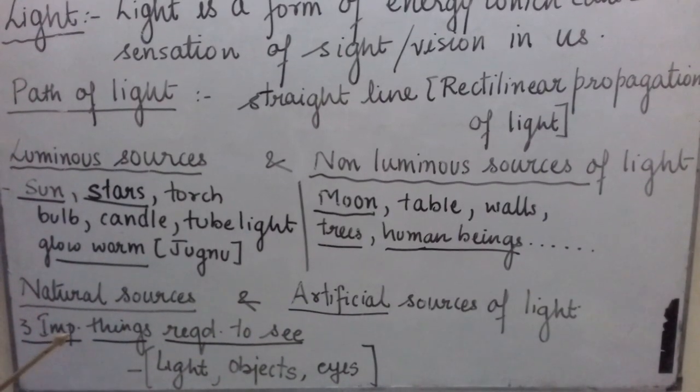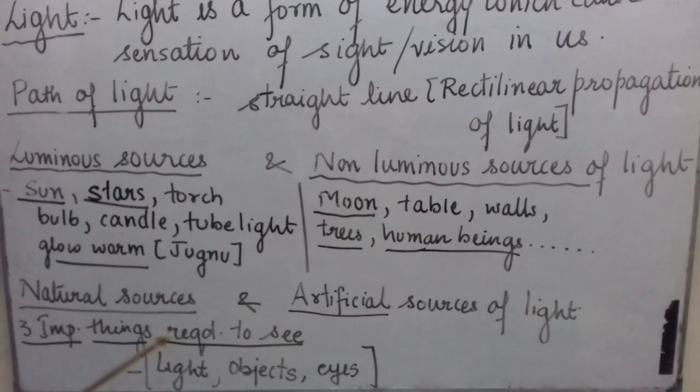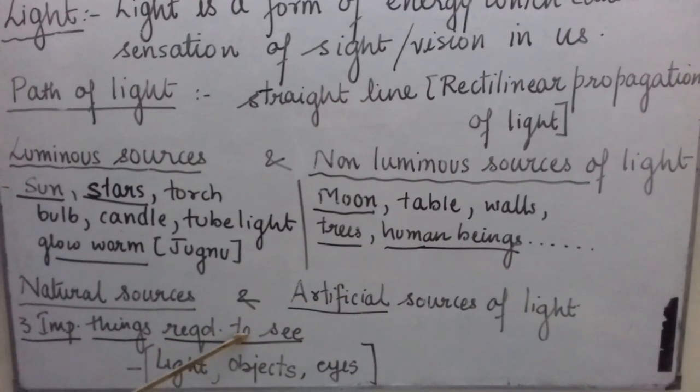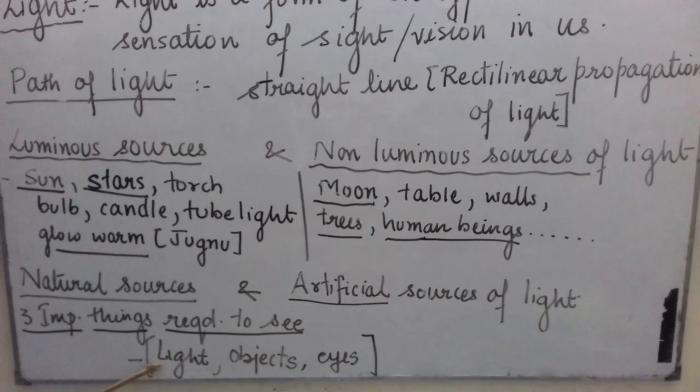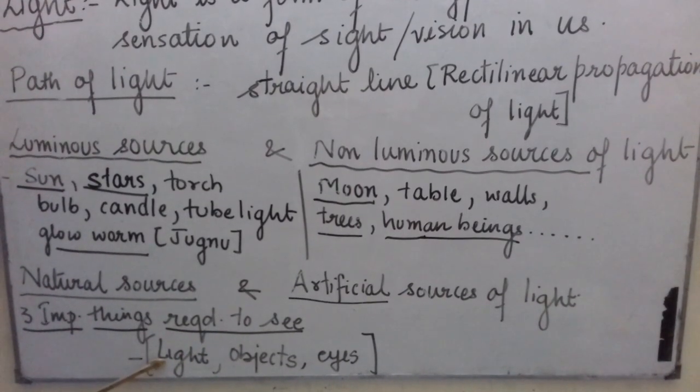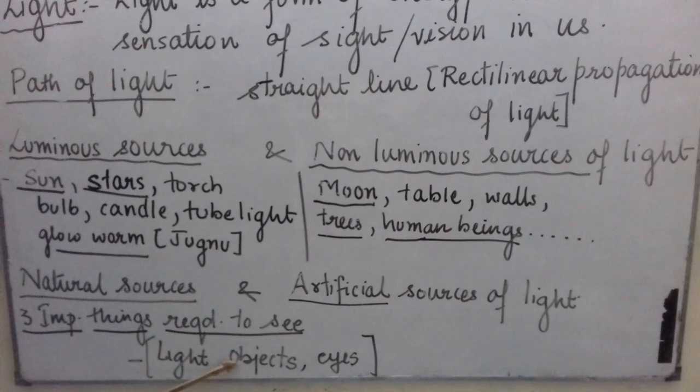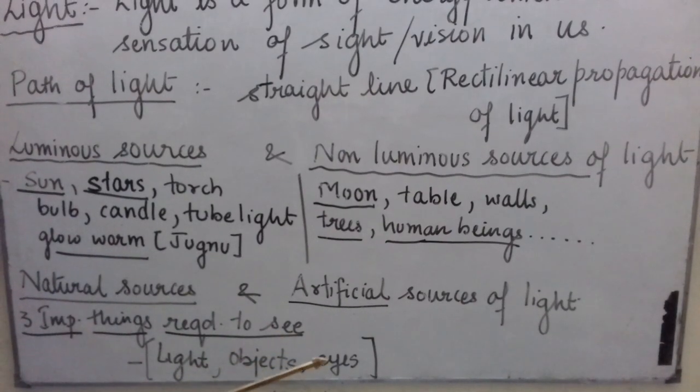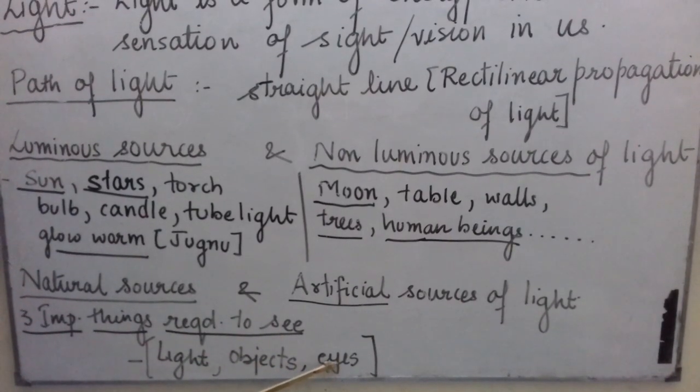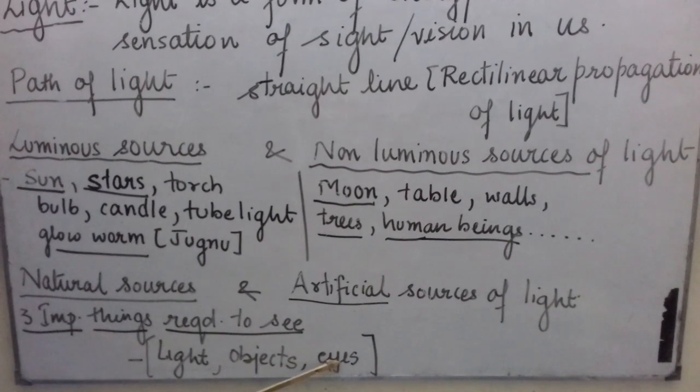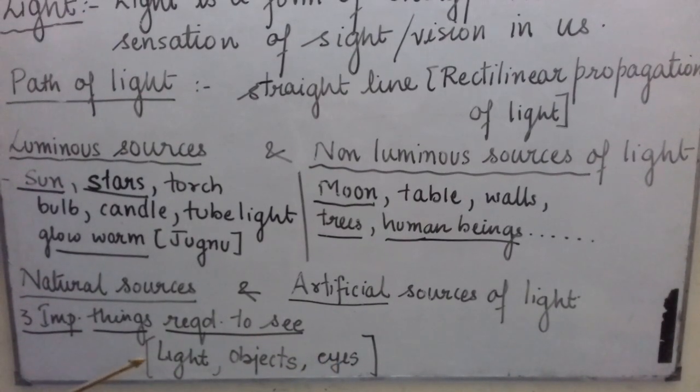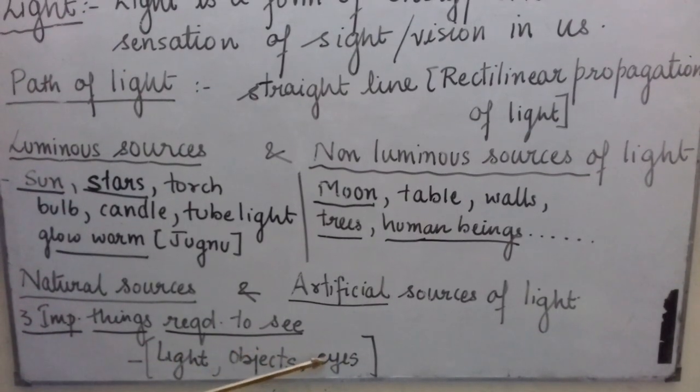Now, very important things that you should know: there are three important things which you require to see anything. Which are they? First of all, light should be present in the room. Second, objects should be available. Third, our eyesight should be normal. We should have normal eyes. It means we should not be blind. So, unless these three things are available, we are not able to see anything around us.